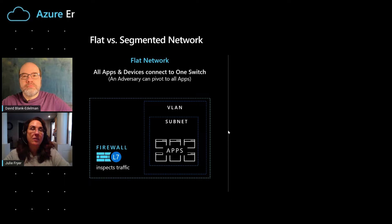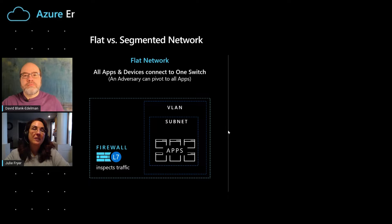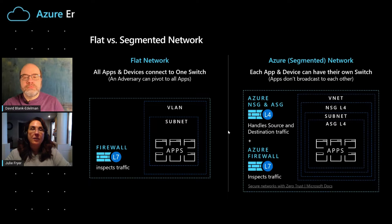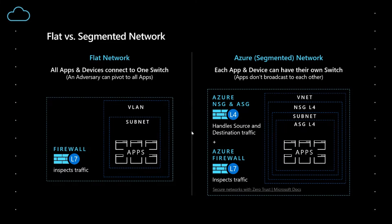In addition to this, when an auditor finds a flat network, they also often find that the network is deployed with default settings. A lot of bad actors already know what the default settings are on these networks, and they will spoof the switch and impersonate the administrator and get into the network as well, so it's not a good thing when you have a flat network. As opposed to a flat network, in Azure Cloud we have what's called a segmented network. We still have the Azure Layer 7 firewall that inspects traffic, but we can do micro-segmentation and get the applications more secure than a flat network.